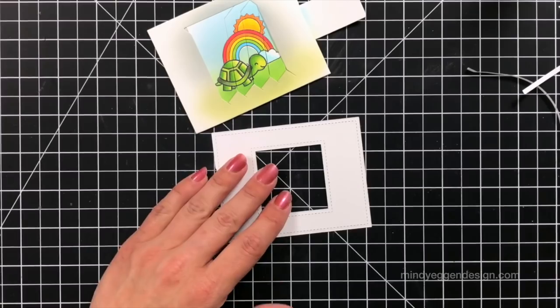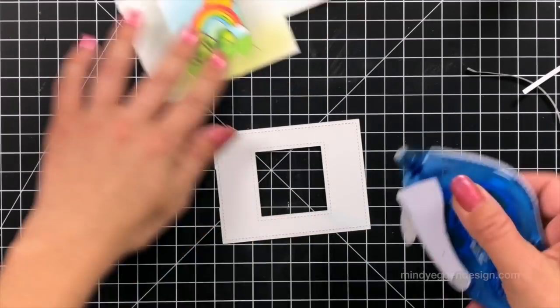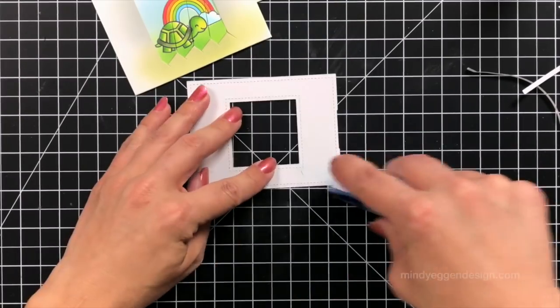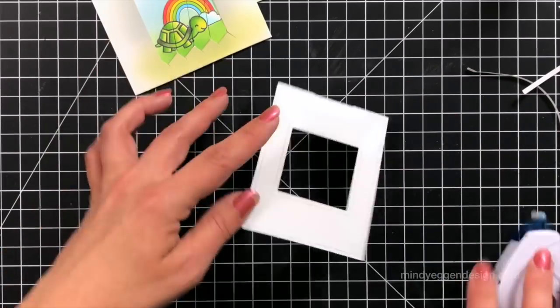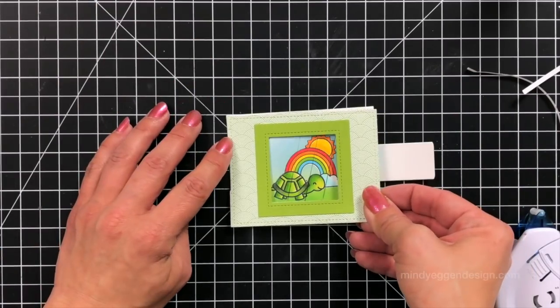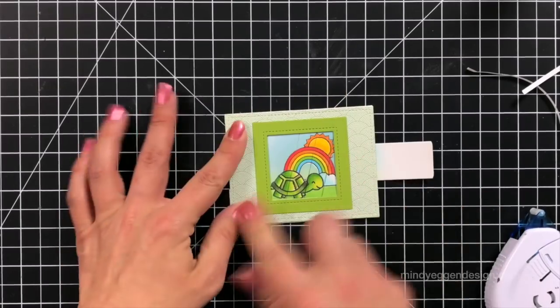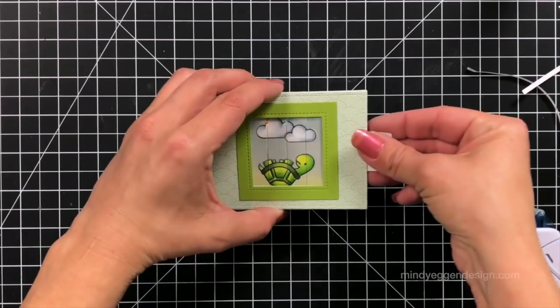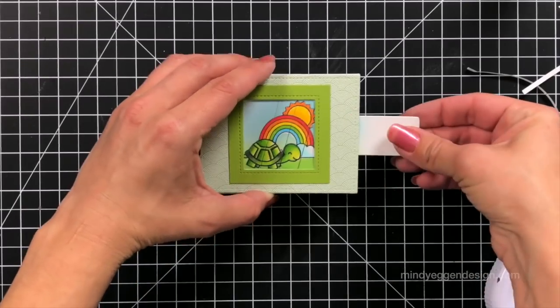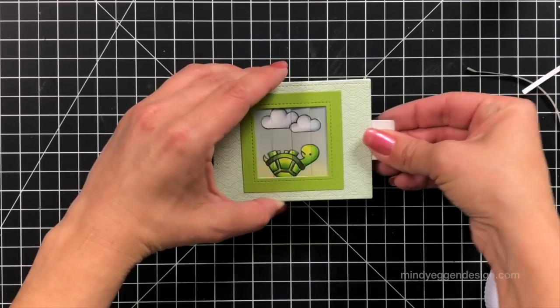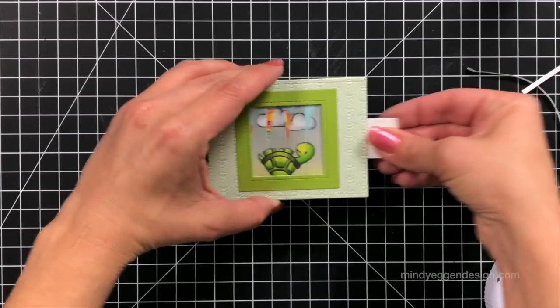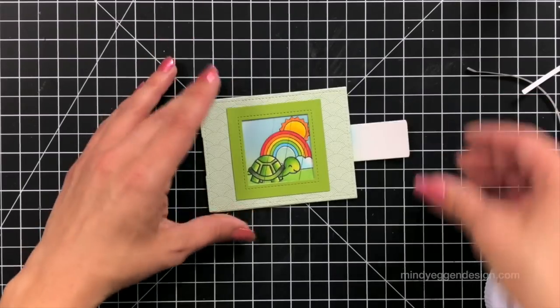Then I can attach my frame to the front. I'm adding adhesive just into the corners and then a line of adhesive on those short sides, that way nothing catches. You can see here, I don't have the notch cut on the right side. It just kind of dawned on me here, but it works. It happens. My picture changer still works fine.